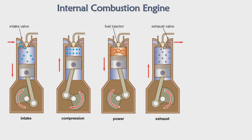In between the two valves, we have a fuel injector as well as a spark plug. For SI engines, instead of a fuel injector, we have a spark plug. For CI engines — diesel engines — instead of a spark plug, we have a fuel injector. Now coming to the basic mechanism of the combustion engine.